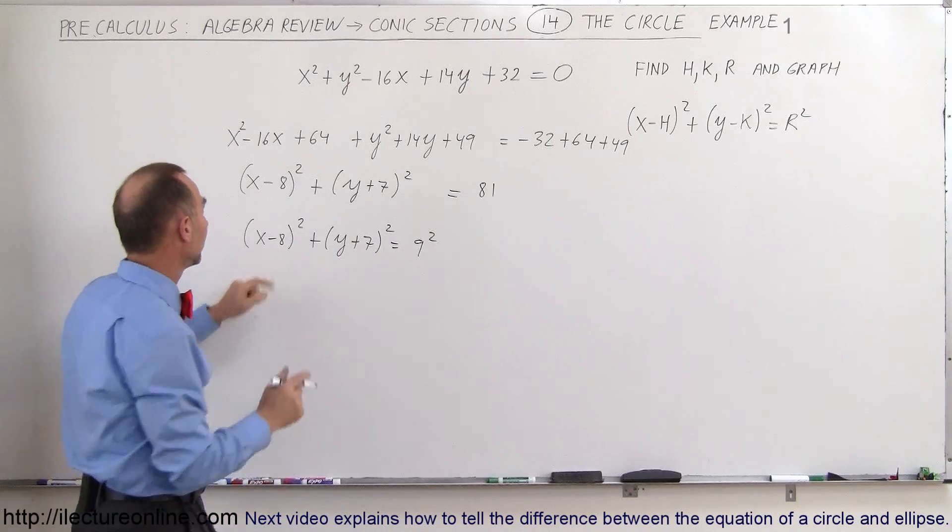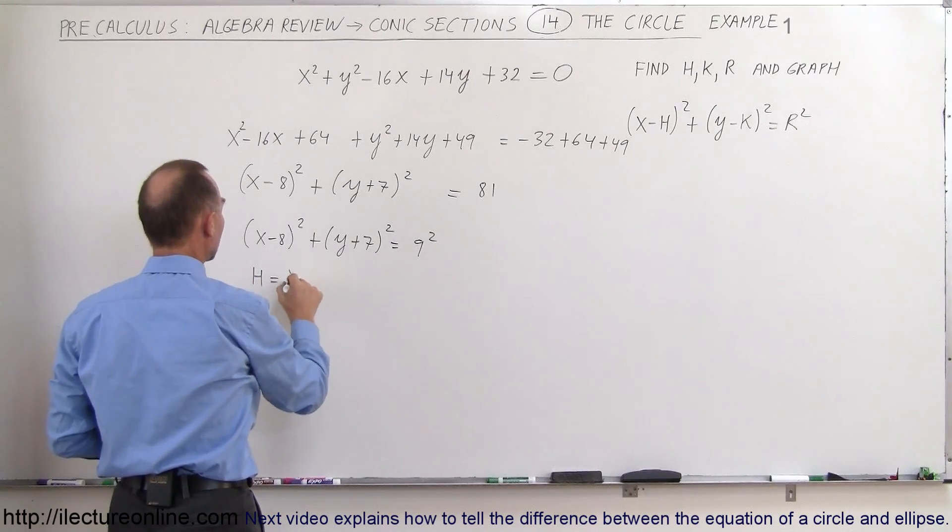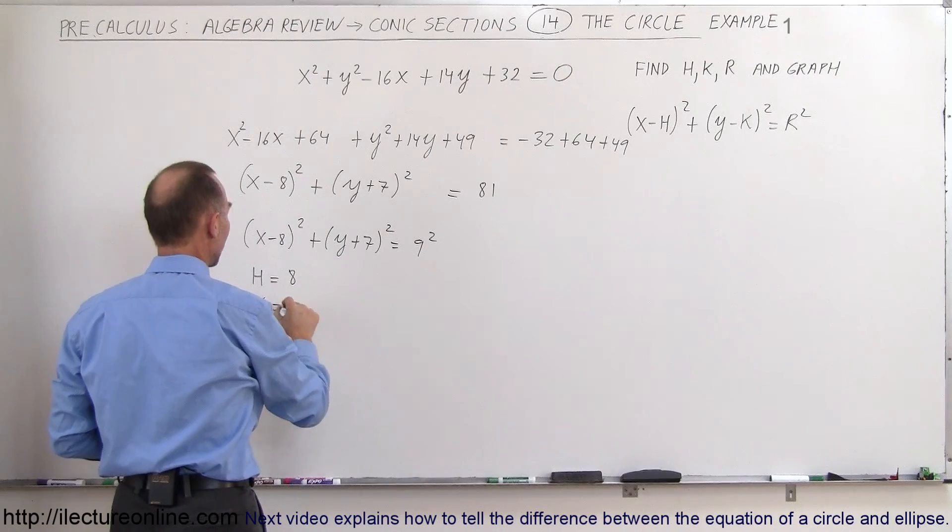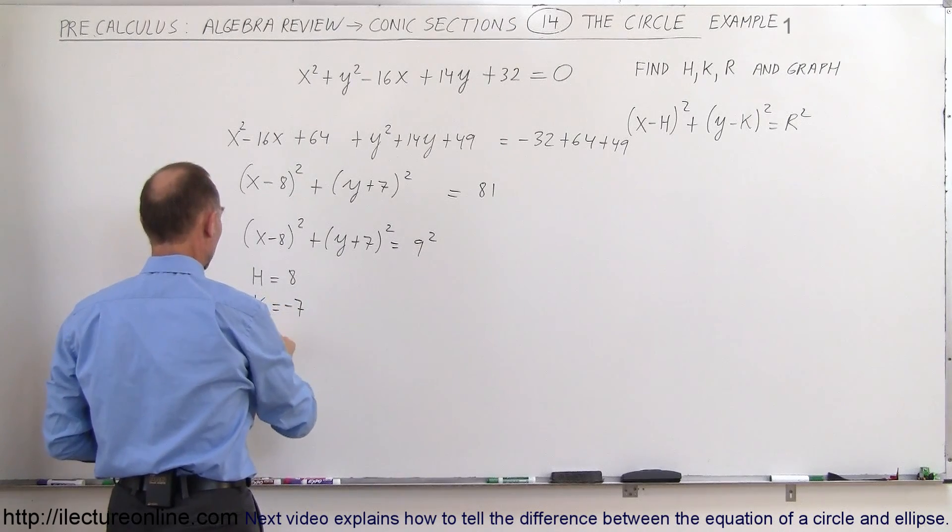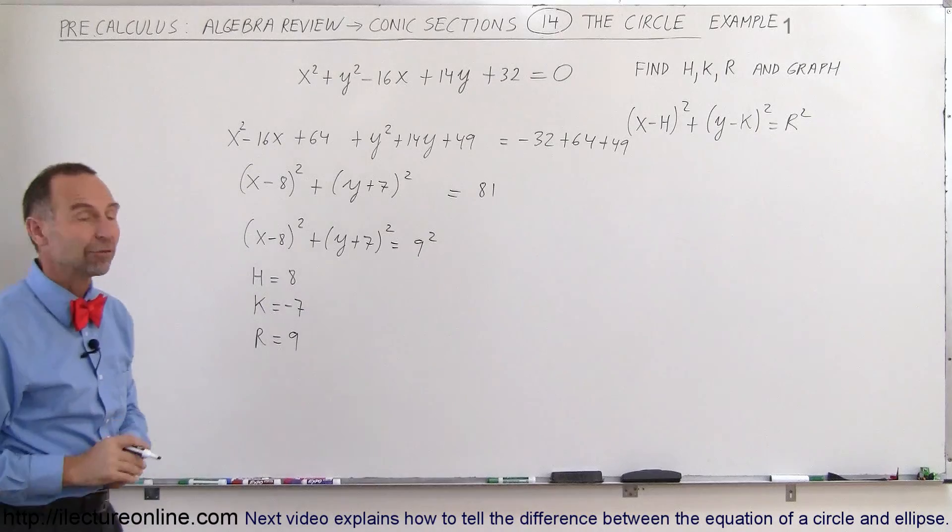Now we have this perfectly written, which means we can simply read right away that h equals 8, k equals minus 7, and r equals 9. Now we're ready to graph the circle.